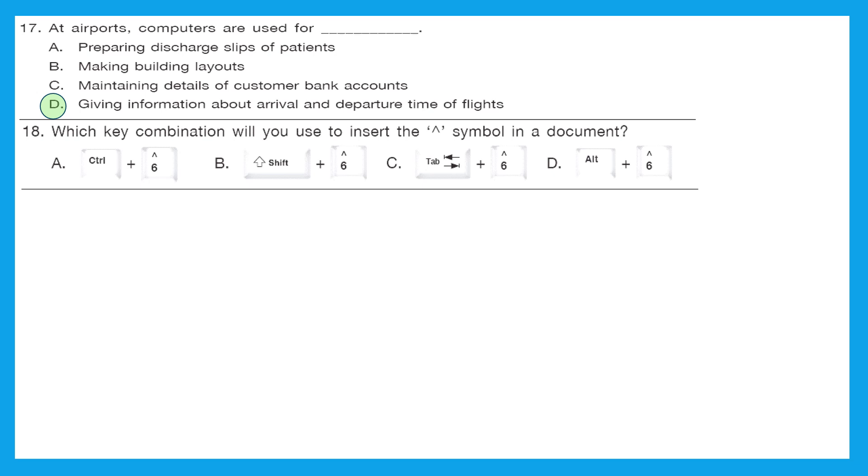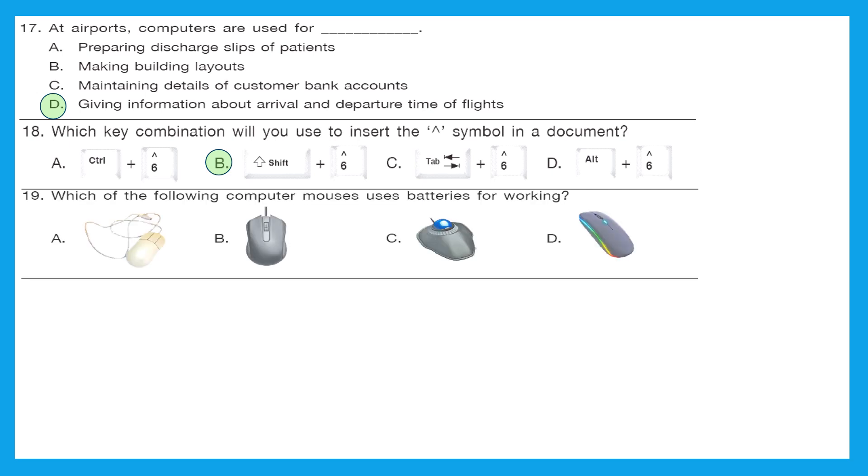Question 18: which key combination will you use to insert the mentioned symbol in a document? So here there are several options written like control plus 6, shift plus 6, tab plus 6 and alt plus 6. So generally when we have to insert anything which is written above the number given in the numerical keys, we generally use shift. So the right answer should be we have to press shift along with that key. Option B is the right answer.